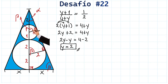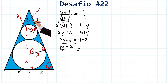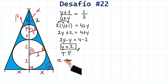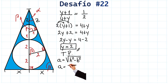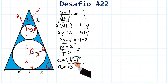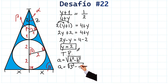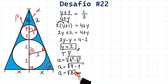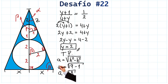Since we have a right triangle with the hypotenuse and one side known, we can find the other side, which we call z, using the Pythagorean theorem. The side equals the square root of the hypotenuse squared minus the other side squared. The hypotenuse is 2 plus 1 equals 3, and the other side is 1. So z equals the square root of 3 squared minus 1 squared, which is the square root of 9 minus 1, giving us the square root of 8.